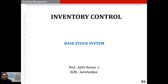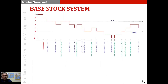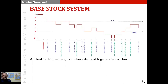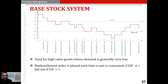The base stock system is used to model and manage the inventory of high-value goods whose demand is generally very low. In this system, a replenishment order is placed each time a unit is consumed if the on-hand inventory is less than or equal to the reorder point, but not if the on-hand inventory is greater than the reorder point.